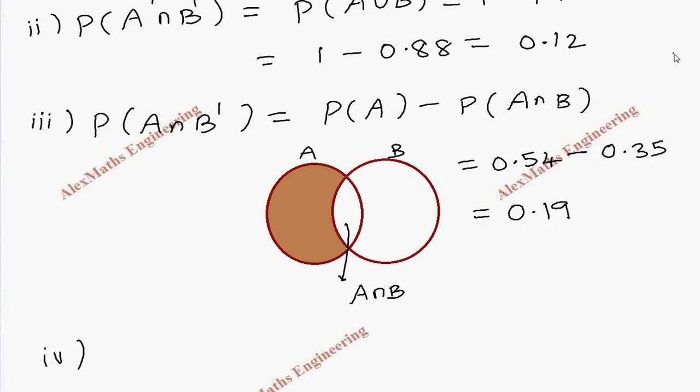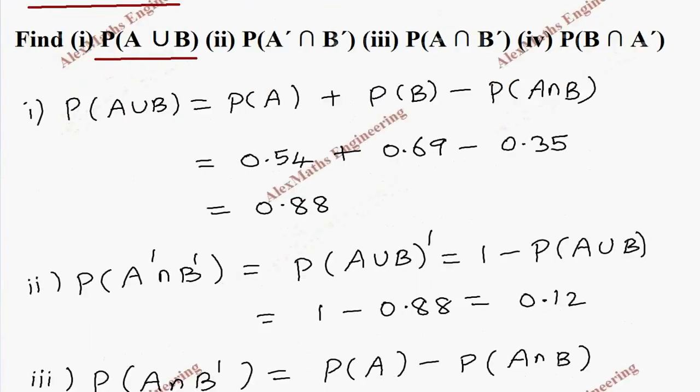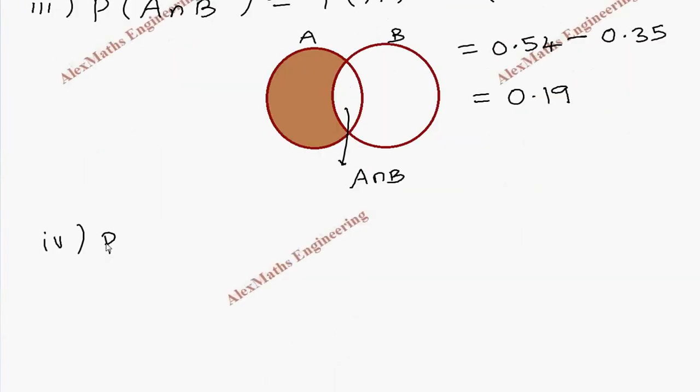In the same way, in subdivision 4, they want B intersection A dash: P of B intersection A dash. It means from the entire B we have to remove the intersection part, the intersection part is P of A intersection B value. So this is entire B. In this entire B, if I remove this part, then I get only B.